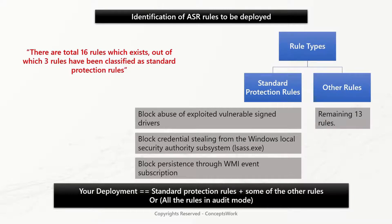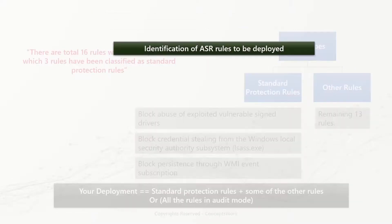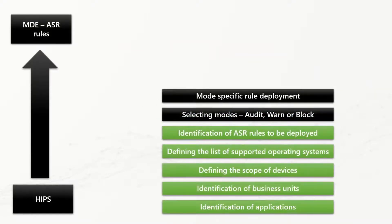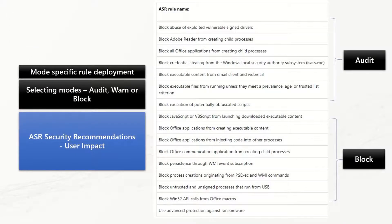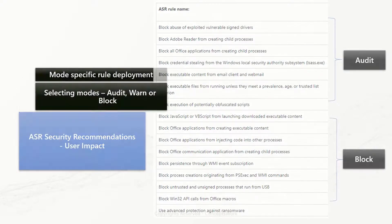Once you have decided which rules to deploy, the next step is to choose the mode and select mode-specific rule deployment. Some rules can be enabled in audit mode, while others where you want protection from day one can be enabled in block or warn mode. Before enabling rules in block or warn mode, please review the ASR recommendation section to check the user impact — this was covered in more detail in our last video.